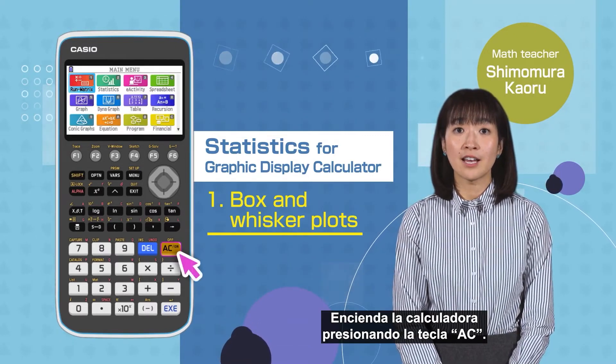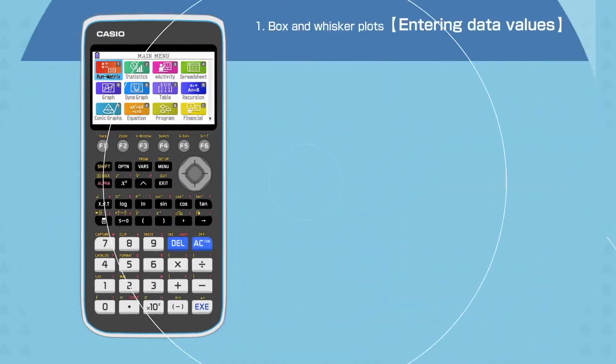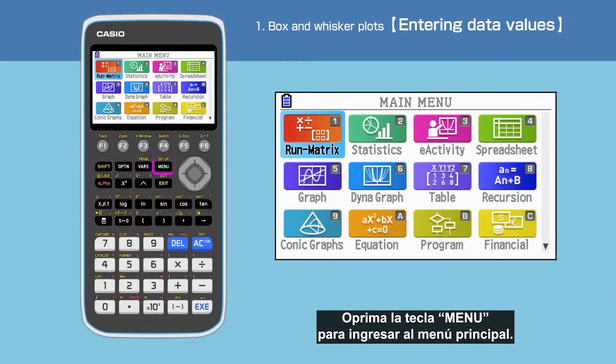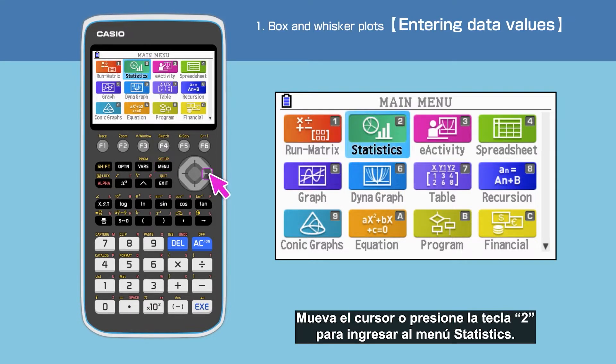Switch on your calculator by pressing AC button. Press the menu button to open the main menu, then move the cursor or press to choose the statistics function.